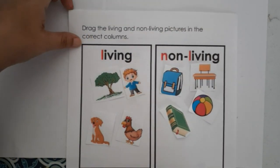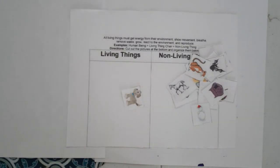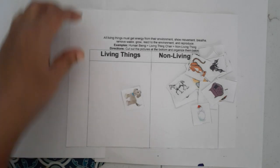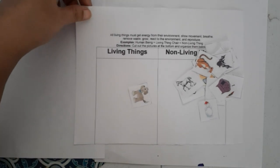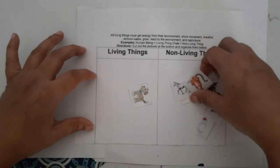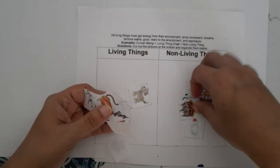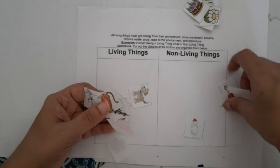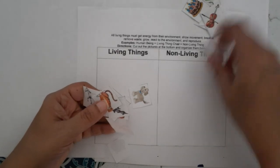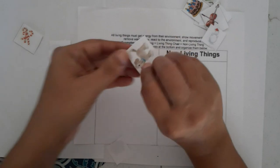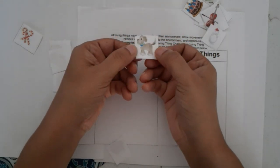Now I'll show you the worksheets I've created for teaching these concepts. Here are pictures of living and non-living things. For example, a dog is living.